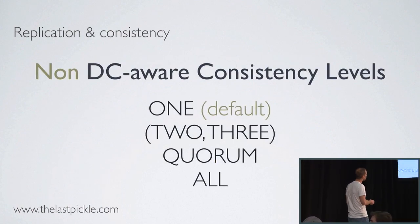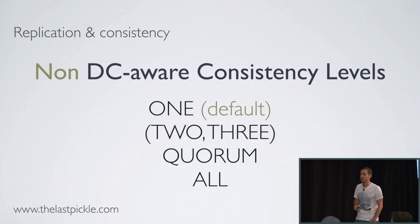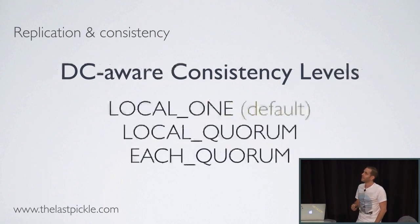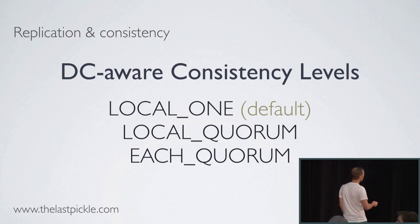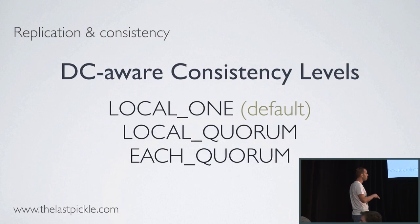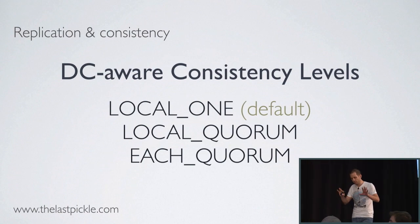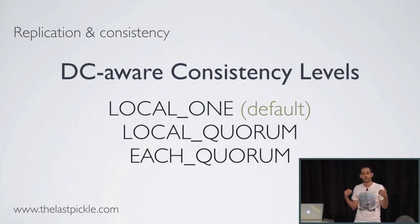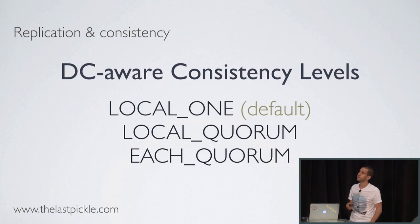The consistency levels. We have a few non-DC aware consistency levels: one, two, three, quorum, and all. I won't talk about ANY because you shouldn't be using ANY. We have DC-aware consistency levels: local one, which is the default; local quorum; and each quorum. Each quorum will give you strong consistency as it will wait for a quorum of acknowledgment on each DC. Local consistency level will operate on a single DC only.